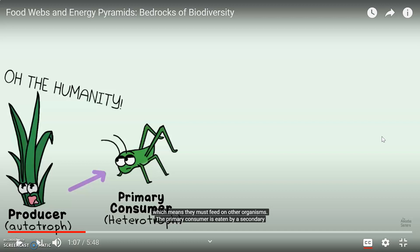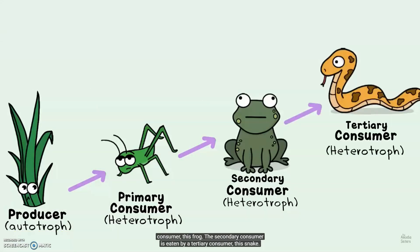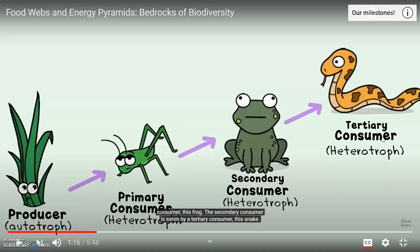We are heterotrophs, just like the grasshopper. The primary consumer is eaten by a secondary consumer — this frog. The secondary consumer is eaten by a tertiary consumer — the snake. The food chain goes in one line: it starts with the producer, goes to the primary consumer, the secondary consumer, and then the tertiary consumer. Tertiary is just a fancy way of saying third, secondary means second, and primary means first. All consumers eat something else; they do not make their own glucose, which is why they're all considered heterotrophs. The producer is always first in line and is an autotroph, meaning it can make its own glucose via the sun and other raw materials.